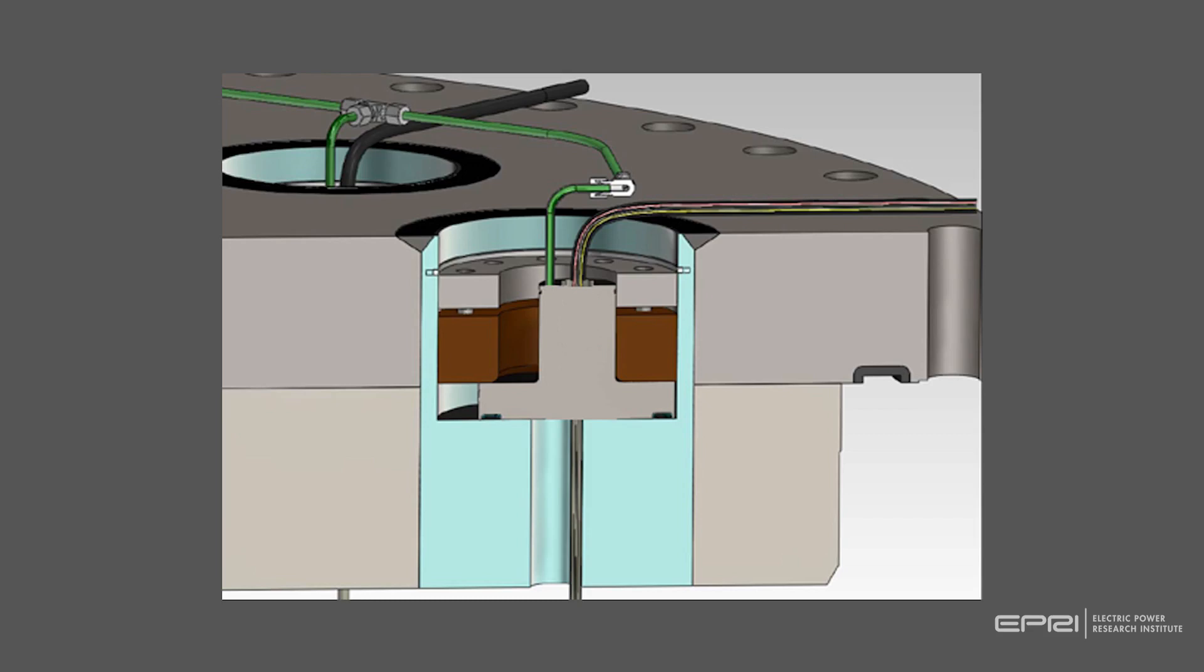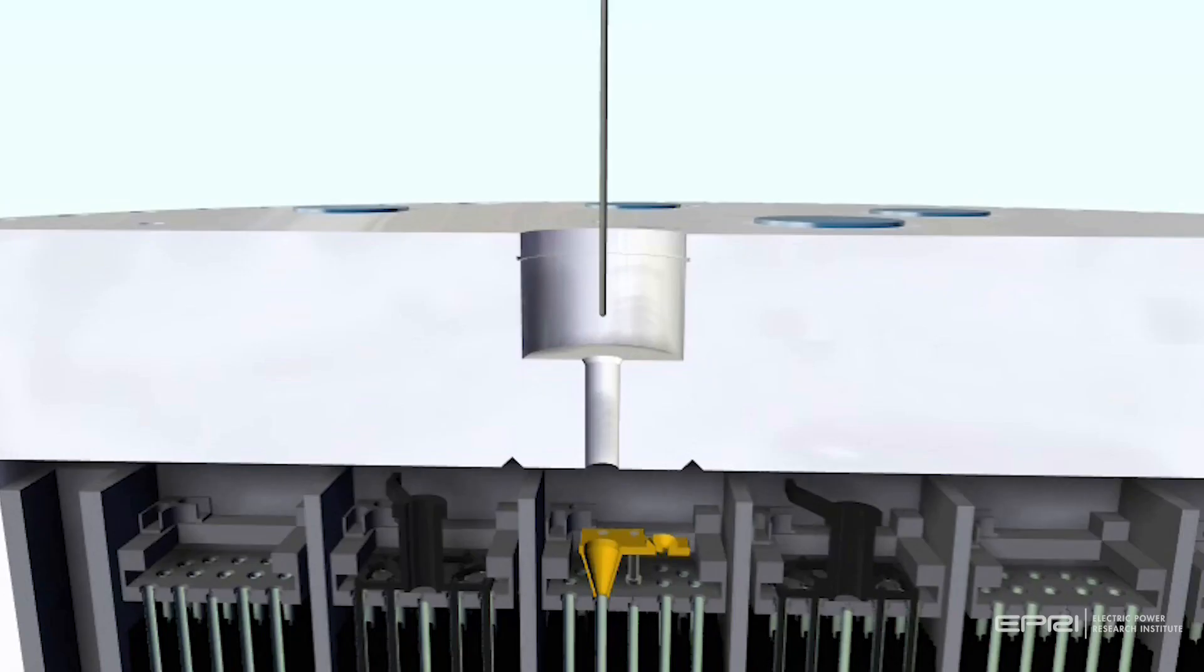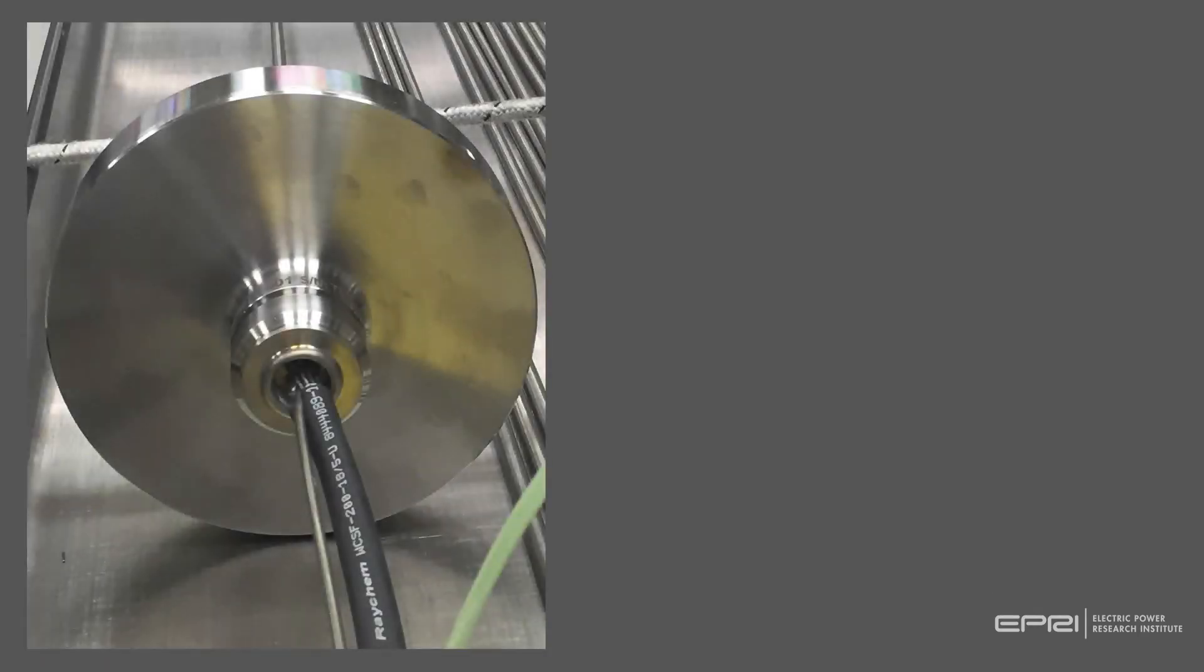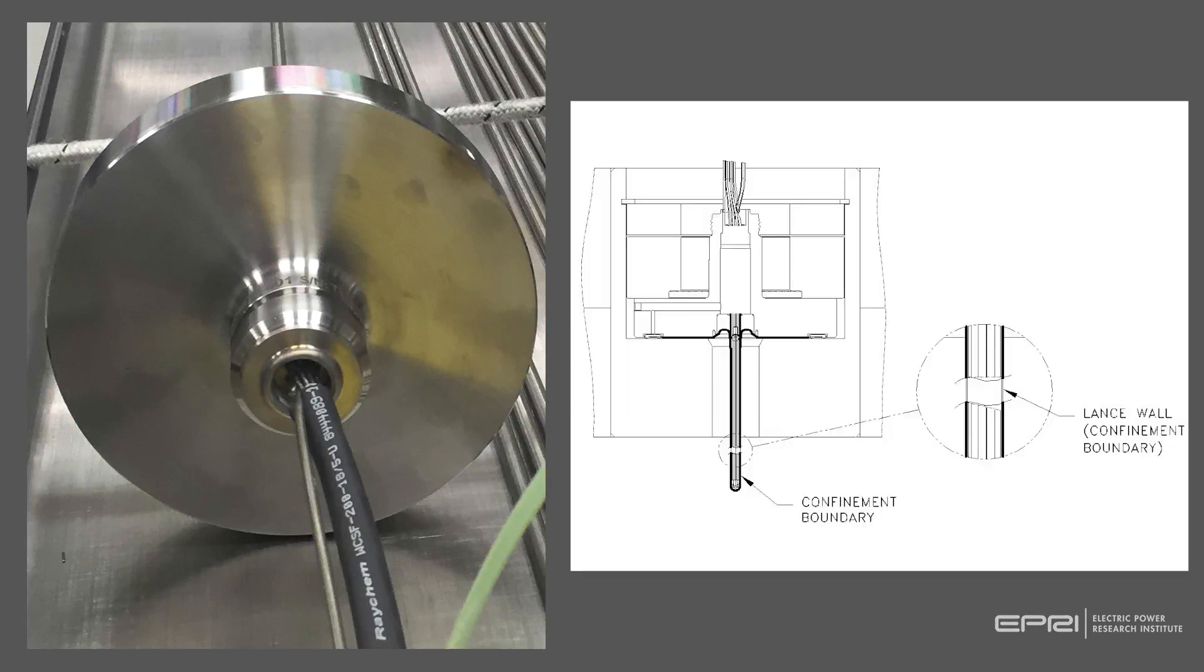The lances, equipped with multiple probes in each lance, were inserted through the lid into the fuel assembly after the fuel was loaded in the cask. The design ensured that the thermocouple lances would be sealed to maintain confinement of the material inside the cask.